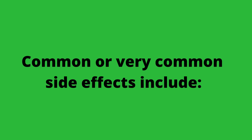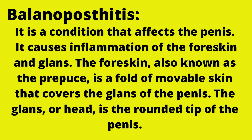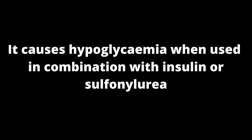Common or very common side effects include: balanoposthitis, which is a condition that affects the penis, causing inflammation of the foreskin and glans. The foreskin, also known as the prepuce, is a fold of movable skin that covers the glans of the penis. The glans, or head, is the rounded tip of the penis. It also causes hypoglycemia when used in combination with insulin or sulfonylurea.